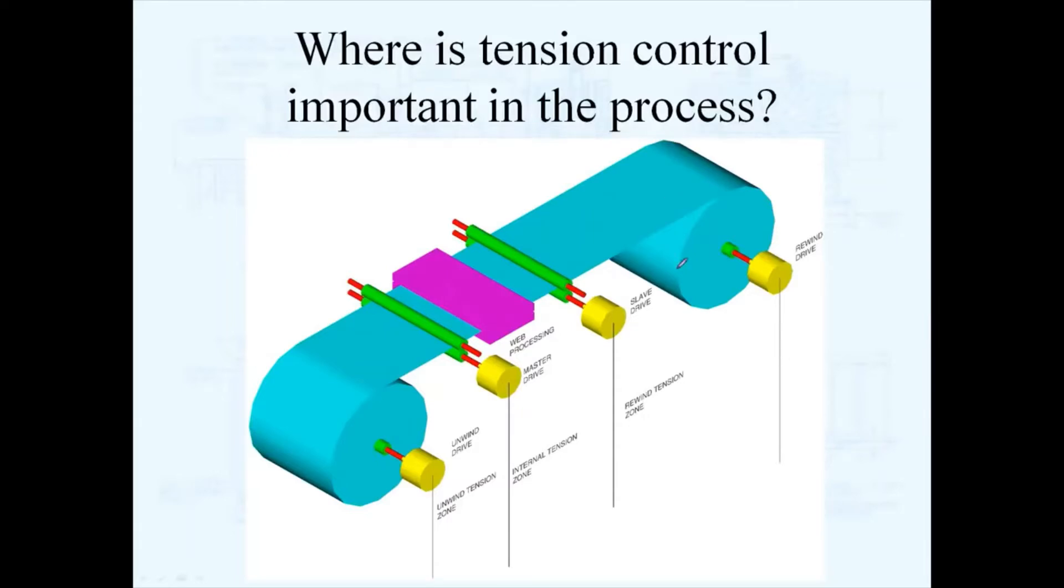All machines in the converting industry basically have three tension zones, and you may have multiple internal zones. But basically, every converting operation has each of the tension zones that can be categorized as one of these three.